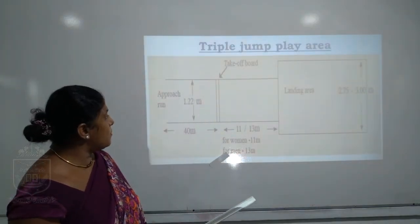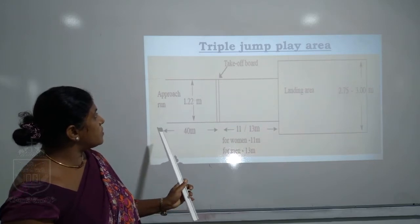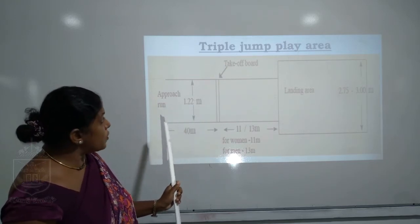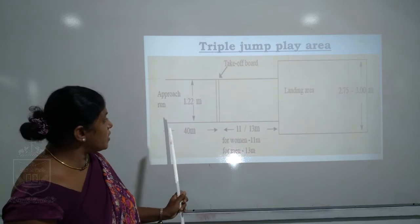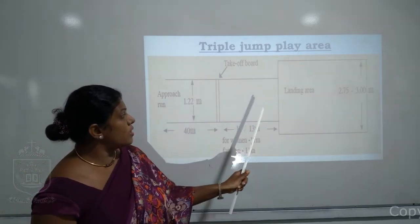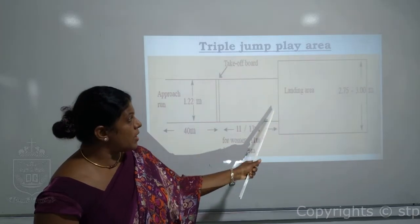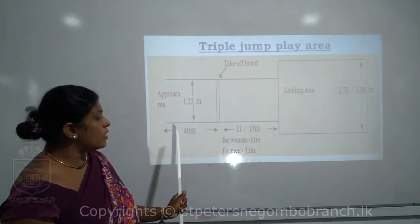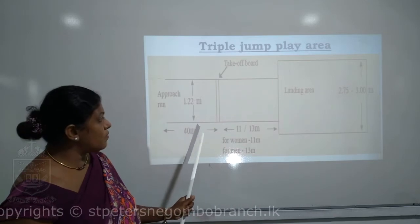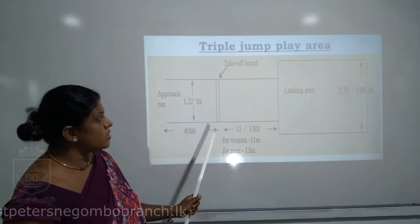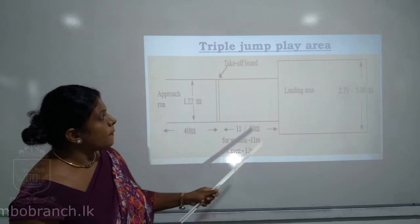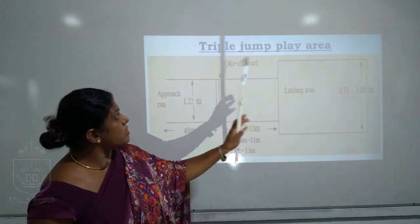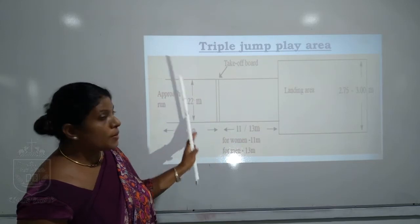This is the play area for the triple jump. The length of the approach track after the take-off board is 40 meters. From the take-off board to the margin of the landing area is about 11 to 13 meters, making the whole length about 51 to 54 meters. The width of the landing area is also indicated. This is the play area of the triple jump.